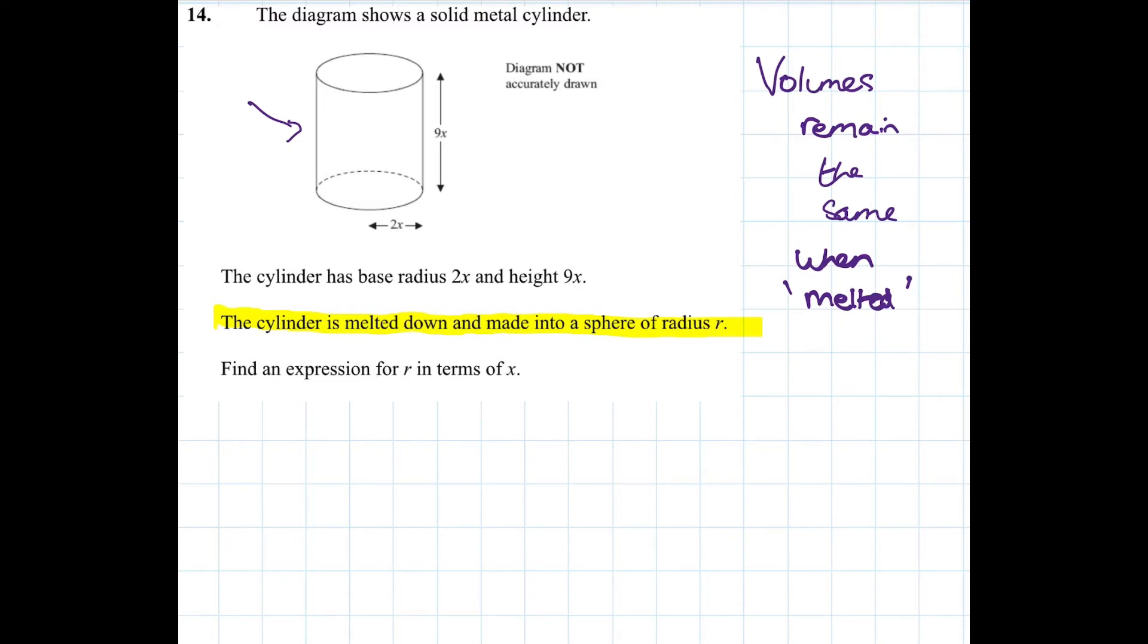We know what the volume of a cylinder is, well that's just the area of this cross section times the height. So volume of a cylinder, it's πr²h. So in this case the radius is 2x so it's π(2x)² times h which is 9x. Maybe I'll put that in there.